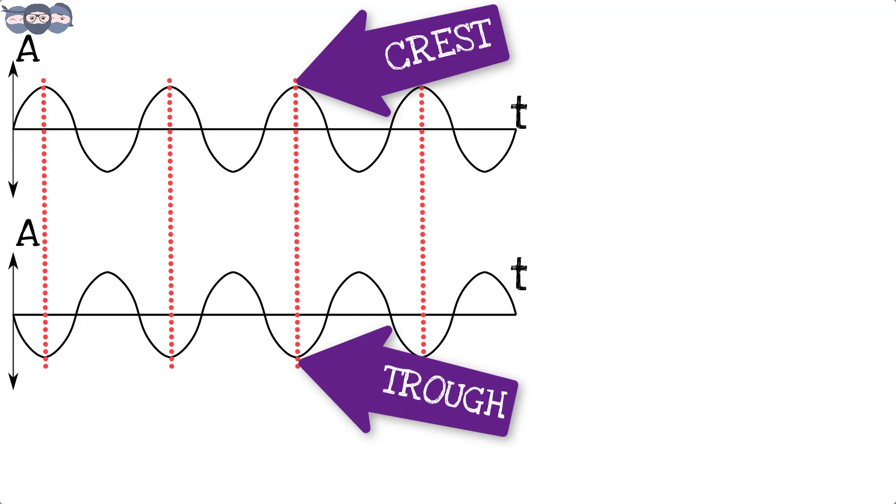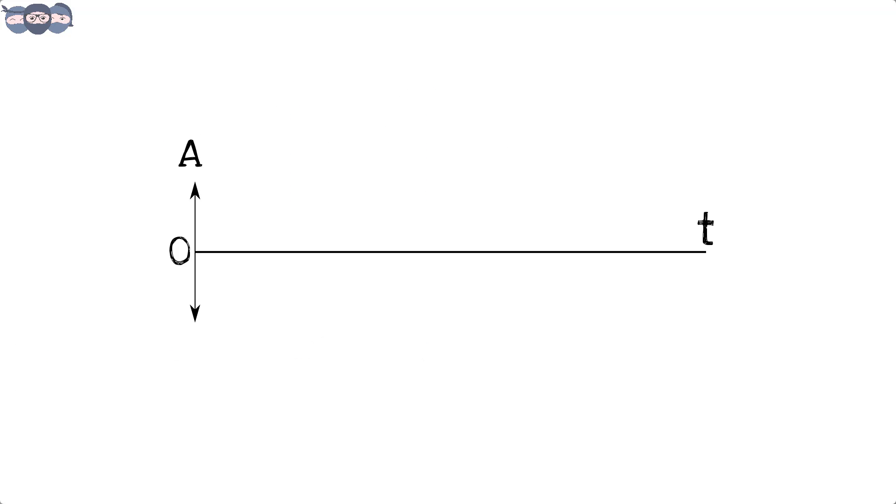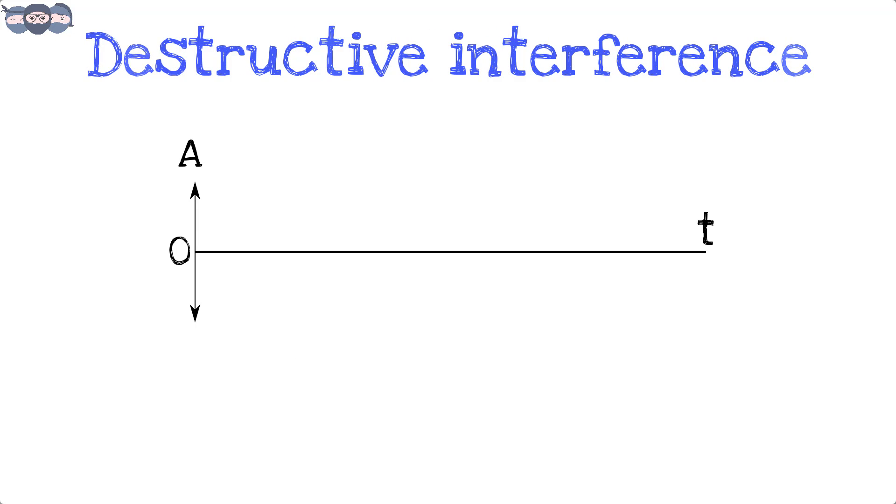Similarly, if crest of one wave aligns with the trough of another wave, the waves cancel out each other and the final wave has zero intensity. This is called destructive interference.